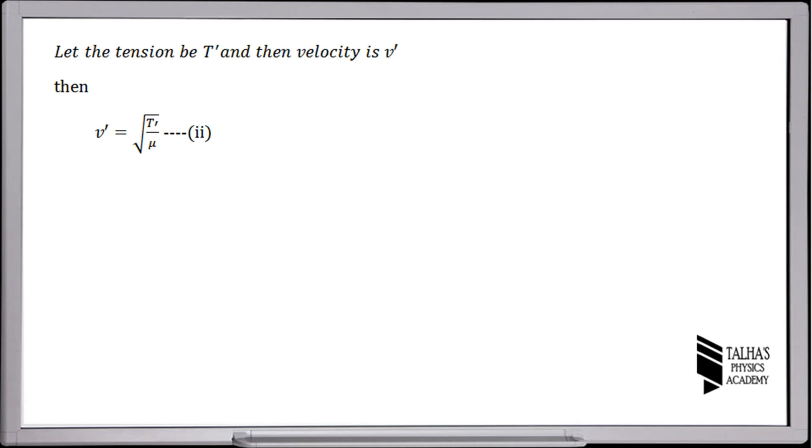In equation number 1 we had v and t, and in this equation we had v prime and t prime. Now, as we know that t prime is equal to twice of t, then putting this value in equation number 2, we will have v prime is equal to under root twice of t over mu. Separating under root 2, and then this under root t over mu, according to equation number 1, is equal to the actual velocity v.